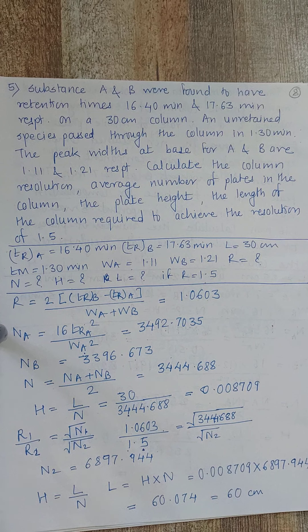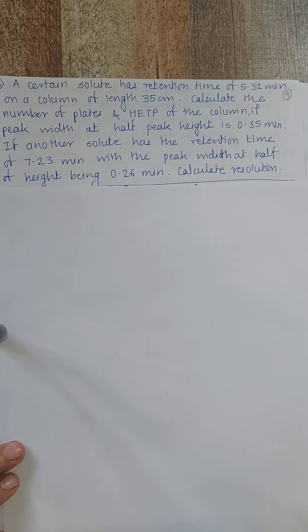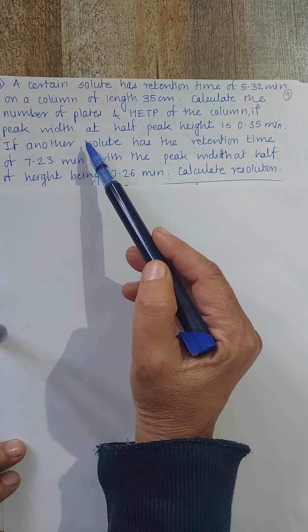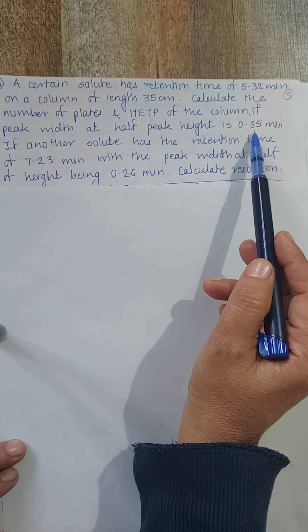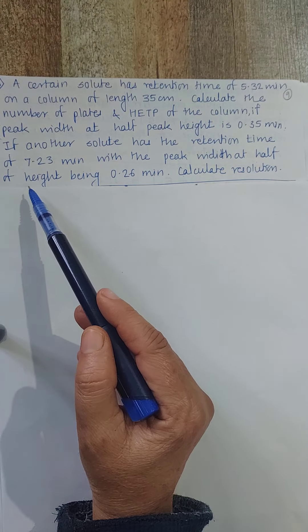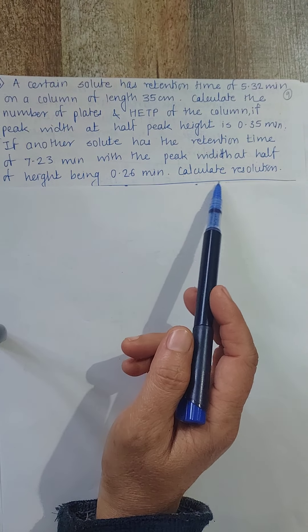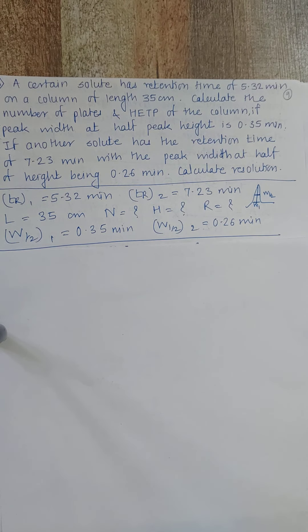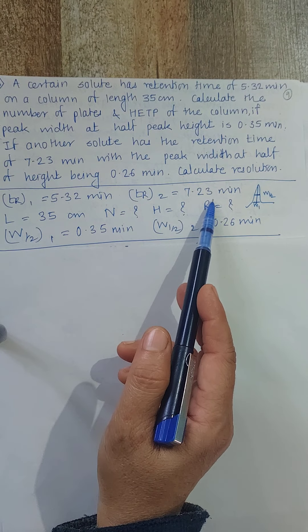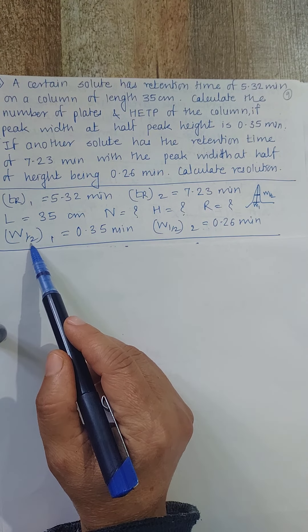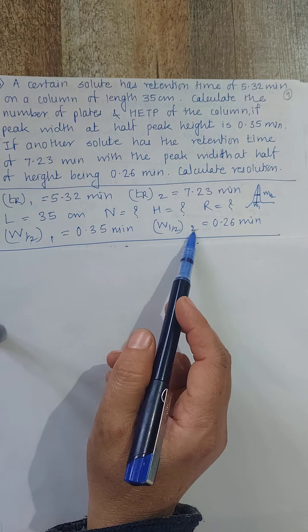Sixth problem: A solute has a retention time of 5.32 minutes on a 35 cm column. Calculate N and HETP if the peak width at half peak height is 0.35 minutes. Another solute has a retention time of 7.23 minutes with a peak width at half height of 0.26 minutes. Calculate resolution. Given: TR1 = 5.32 min, TR2 = 7.23 min, L = 35 cm, W½(1) = 0.35, W½(2) = 0.26.